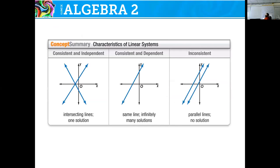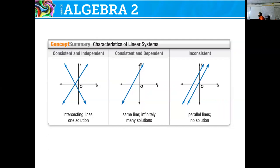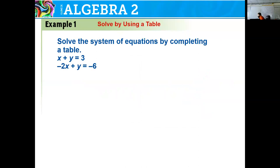Consistent and independent means they intersect at one point — one solution. Consistent and dependent means it's the same line, so any x value maps onto both equations. Inconsistent only happens when there are parallel lines — no solution. Remember that lines continue to infinity, so unless they are completely parallel, they will intersect at some point. If they have differing slopes, they absolutely have to intersect.